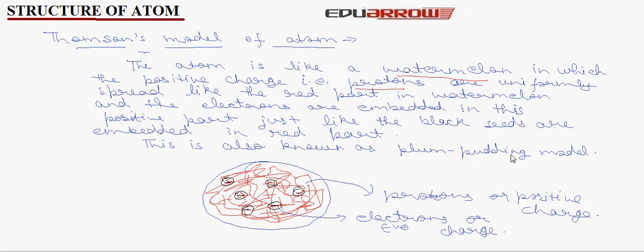In this figure, the red part is the protons or positive charge, and the black seeds-like structure are the electrons of negative charge. This is Thomson's model of atom.